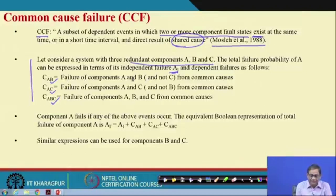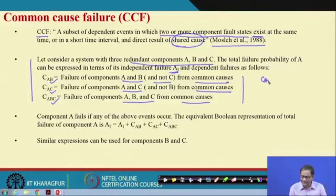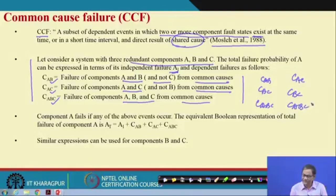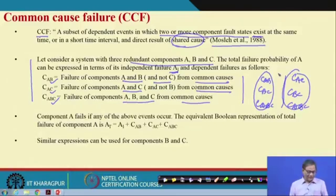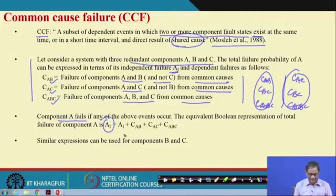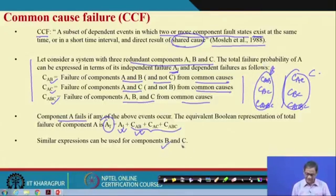For example, with three components A, B, C: independent failure of A is A1; dependent failures include common failure of A and B (not C), common failure of A and C, and common failure of A, B, and C simultaneously. In Boolean expression, the total failure of A equals independent failure plus all common cause failures. Similar expressions can be written for B and for C.